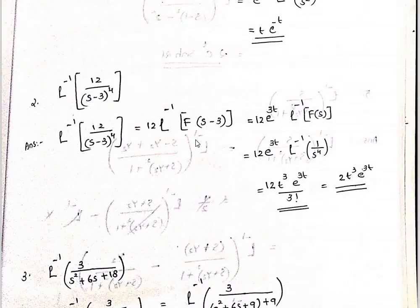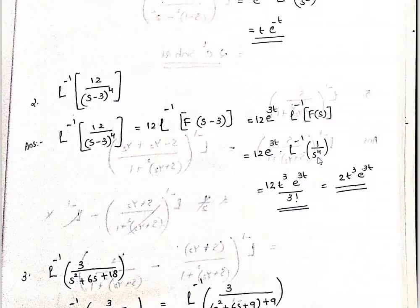For s minus 3: e raised to 3t times L inverse of F of s. For 1 divided by s raised to 4, the inverse transform gives t cubed divided by 3 factorial.